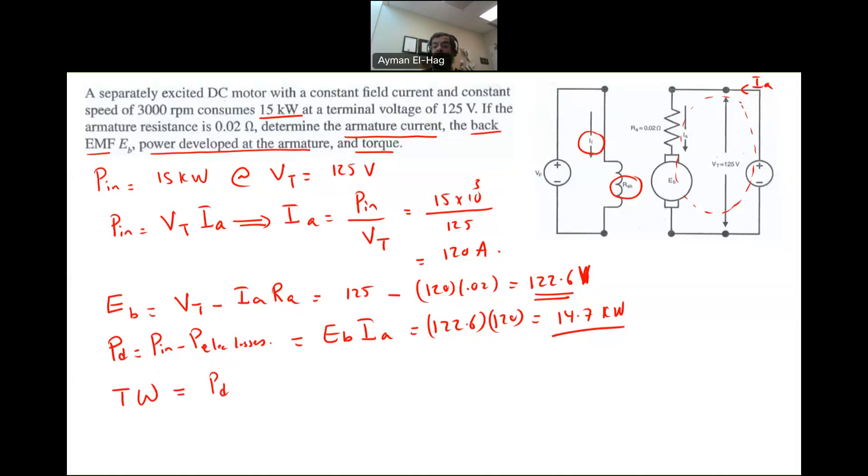So the torque can be the torque at the developed stage or at the output power stage. So it depends where you ask for your torque. You need to use the correct power. So since I want to find the torque at the armature, we have to use the P developed.